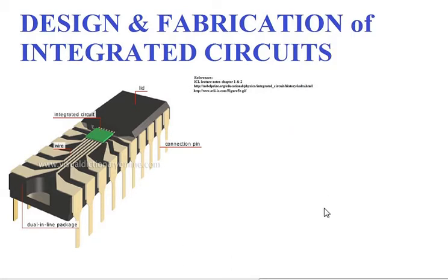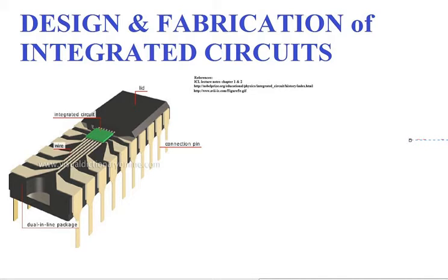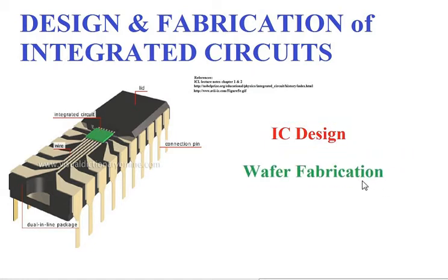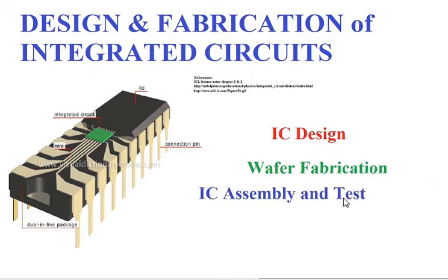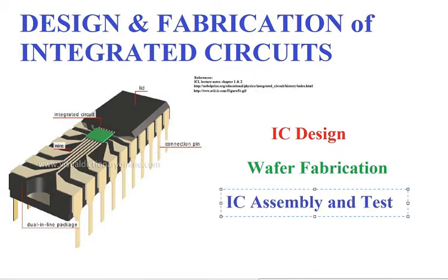The approach we are going to take for this particular segment is to divide the design and fabrication of integrated circuits into three parts. The first part being IC design. Following which, we have wafer fabrication — here we will focus on the CMOS technology, which is the predominant IC technology. And finally, we will touch on IC assembly and test.